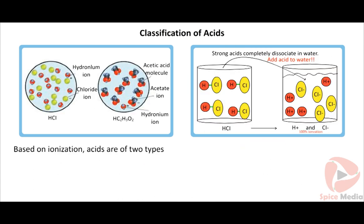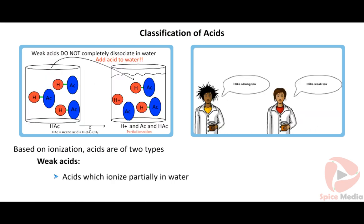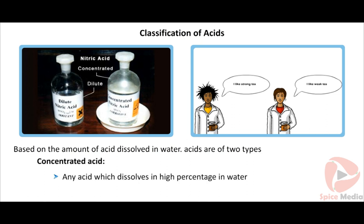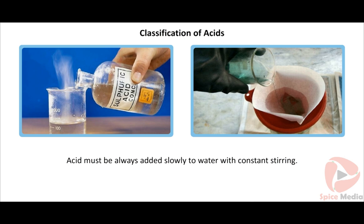Based on ionization, acids are of two types: strong acids, which ionize completely in water — e.g., HCl (hydrochloric acid); and weak acids, which ionize partially in water — e.g., CH₃COOH (acetic acid). Based on the amount of acid dissolved in water, concentrated acid dissolves in a high percentage in water, while dilute acid dissolves in a low percentage. Care must be taken while mixing acid with water: acid must always be added slowly to water with constant stirring. If water is added to a concentrated acid, a large amount of heat is generated which may cause burns and the mixture may splash out of the container.